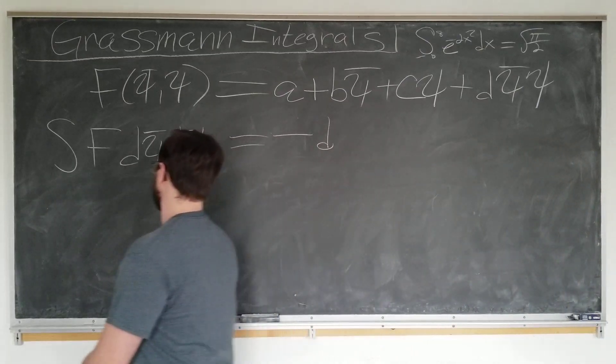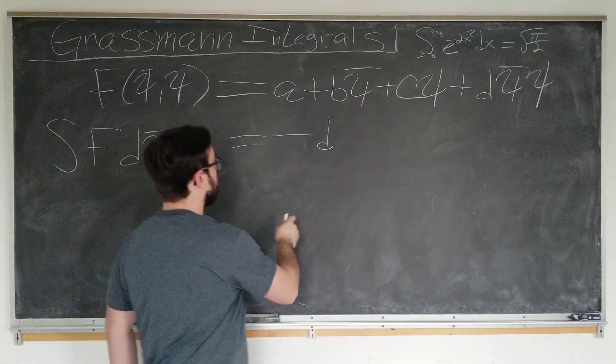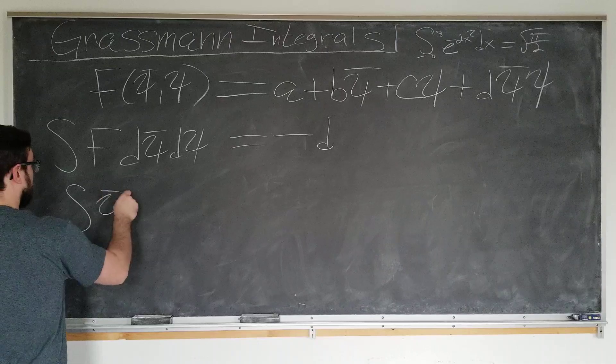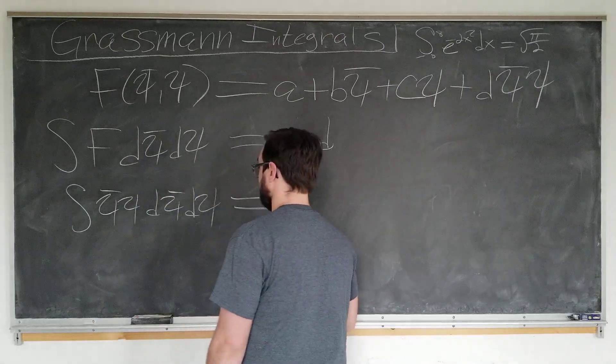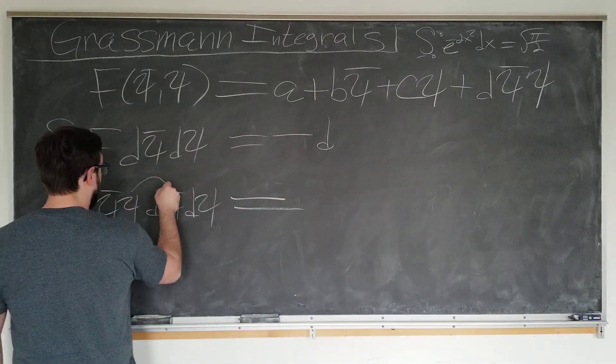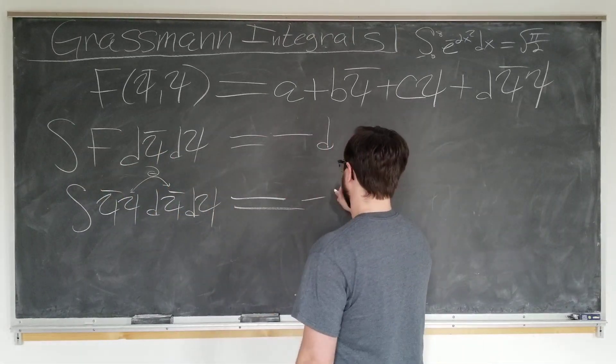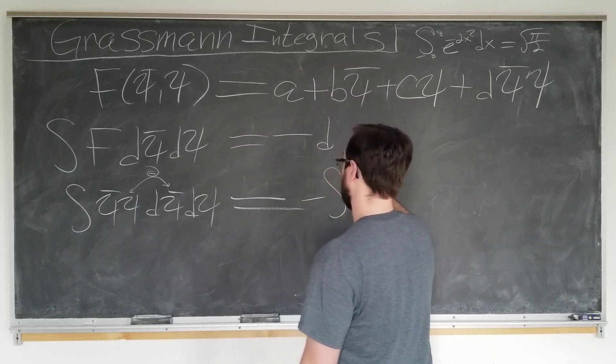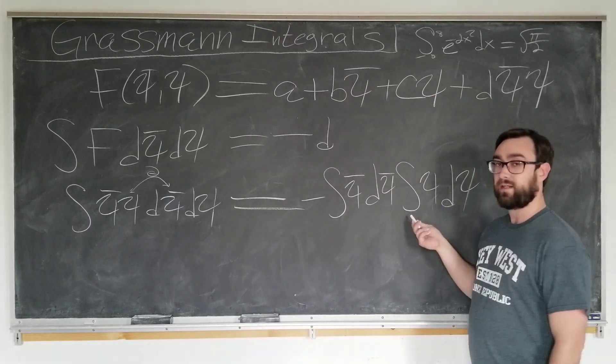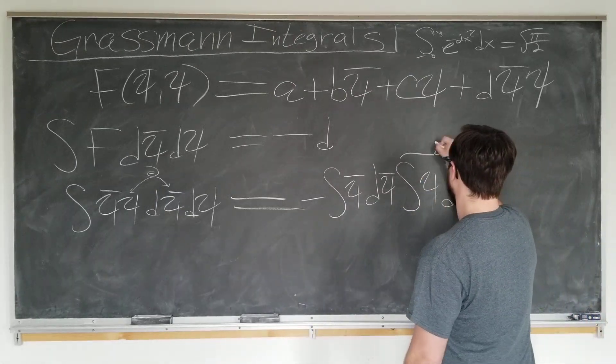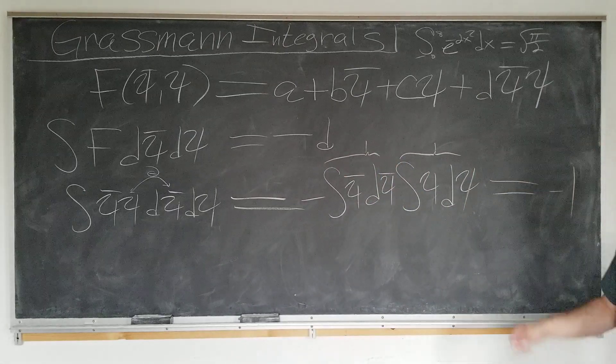And I will now show the important lemma. So we know that psi bar psi d psi bar d psi is equal to, well, I'm just going to go ahead and interchange these at the cost of a minus sign. Minus integral of psi bar d psi bar integral of psi d psi. Or I have added a second integral sign for clarity. Both of these are just individually one. So the whole thing, just minus one. Easy peasy.